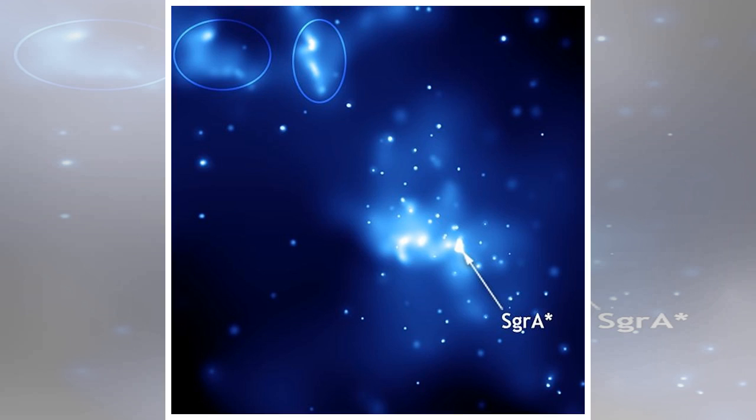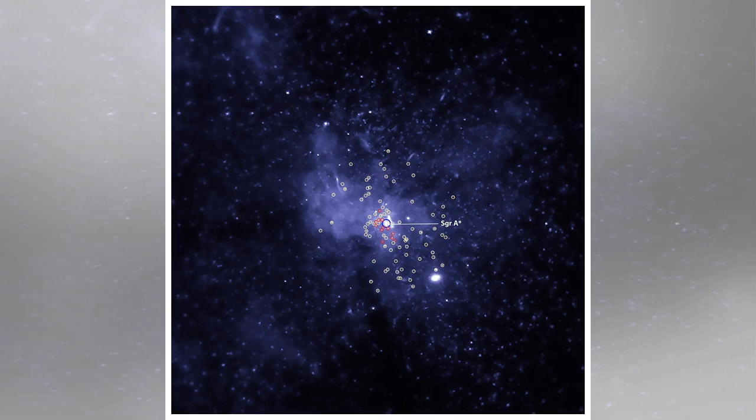Therefore, the detections in this study imply that a much larger population of fainter, undetected X-ray binaries, at least 300 and up to 1,000, containing stellar-mass black holes should be present around Sgr A*.